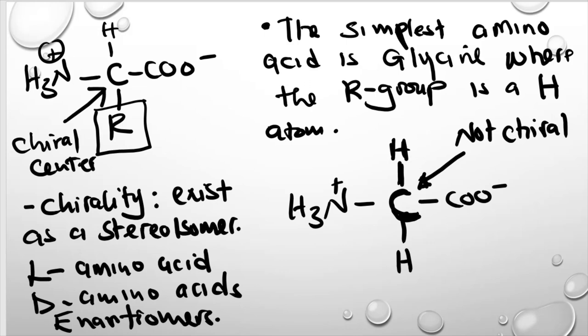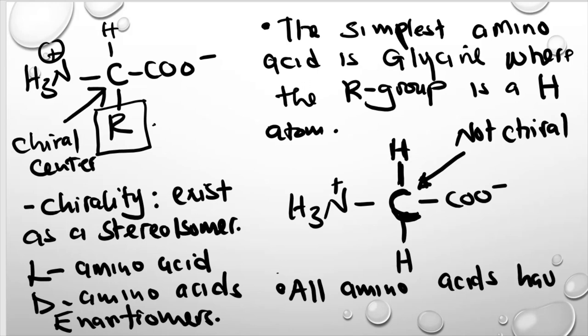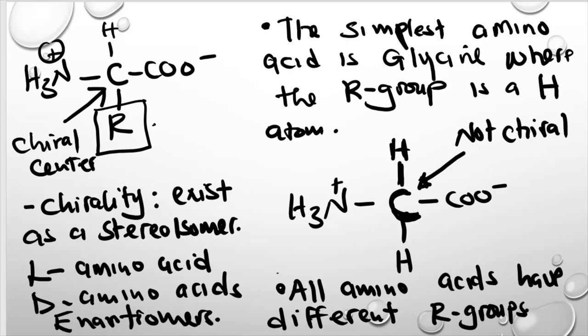What differentiates amino acids is the R group — all amino acids have different R groups. The nature of the R groups gives the properties of that amino acid. Some R groups are polar, some are non-polar, some are acidic, and some are basic.